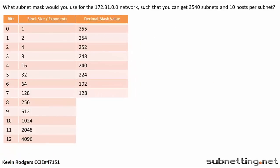What subnet mask would you use for the 172.31.0.0 network such that you could get 3,540 subnets and 10 hosts per subnet?